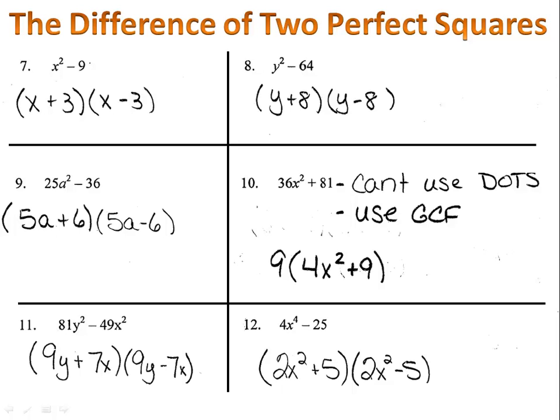Number 10 is one where you have to be careful. Notice they are perfect squares, however, it is not a difference, it's a sum. However, you can pull a greatest common factor out. 9 is the greatest common factor and we're left with 4x squared plus 9 inside the parentheses.